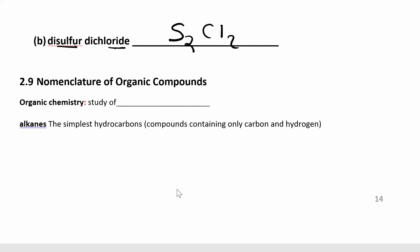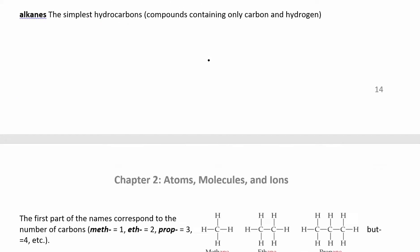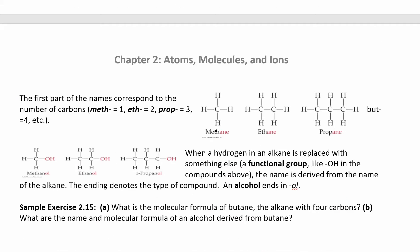Now we'll do a little bit of organic chemistry — the last topic. We did inorganic compounds, acids, and molecular; now we do organic. Organic chemistry is the study of carbon. Alkanes are the simplest hydrocarbons — just carbon and hydrogen. The simplest example is methane. Carbon likes to have four bonds, so whenever you make an organic compound, make sure carbon has four bonds.